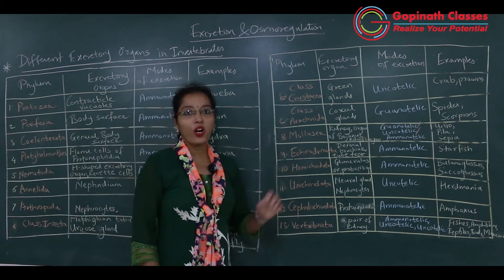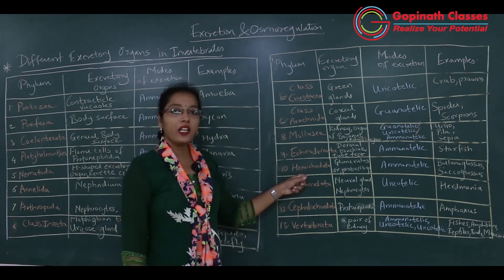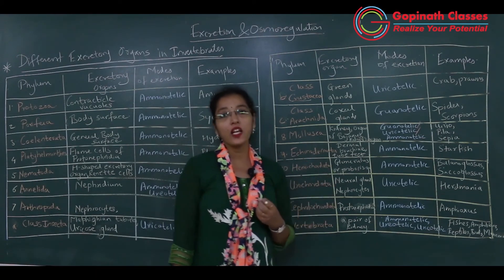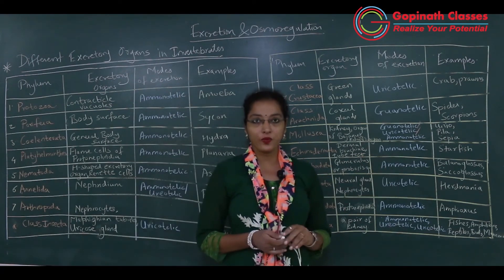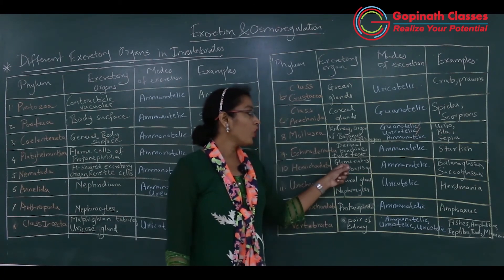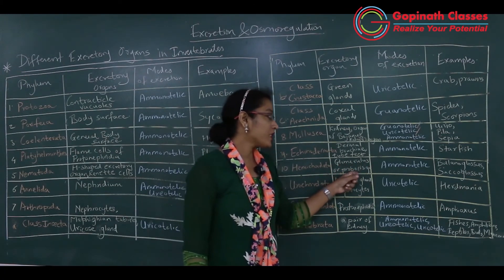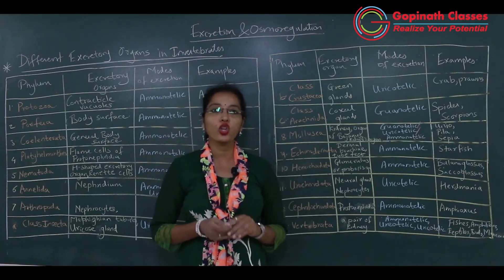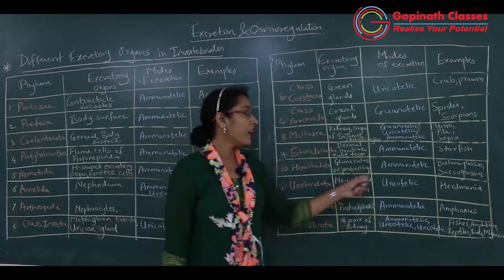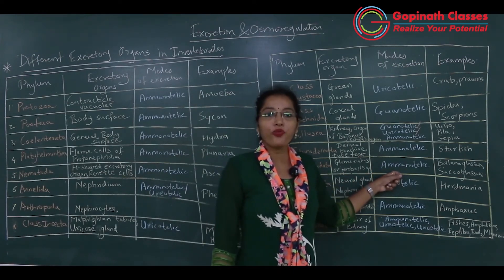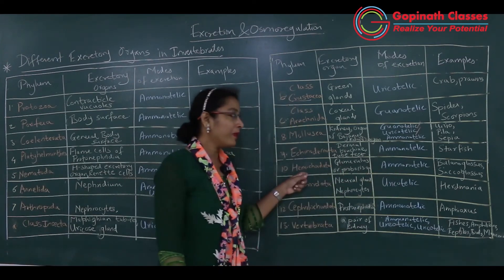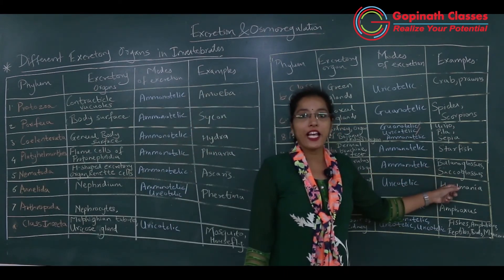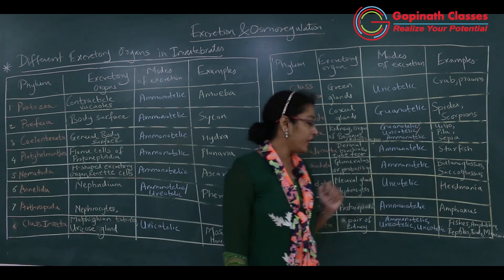Hemichordata is the phylum in which organisms excrete ammonia as nitrogenous waste through glomerulus or proboscis glands. Proboscis glands or glomerulus remove nitrogenous waste in the form of ammonia in hemichordates. Examples: Balanoglossus and Saccoglossus.